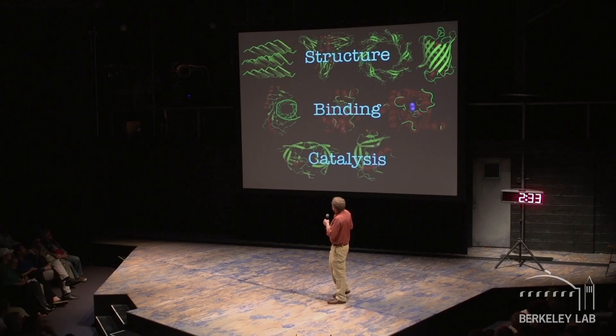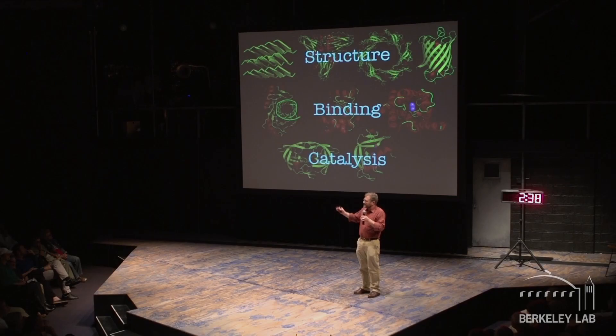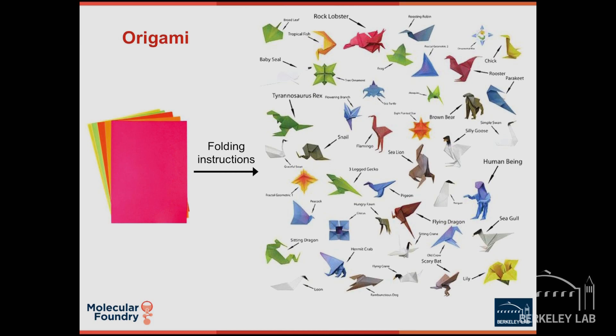What we need to understand is the relationship of the sequence of monomers to these structures. I liken this to origami — you take a common starting material, a piece of paper, and by providing very specific instructions you can achieve all kinds of different shapes. And if you've tried this, it's actually pretty hard. The key is understanding these folding instructions, and that's what I'm doing in my research.